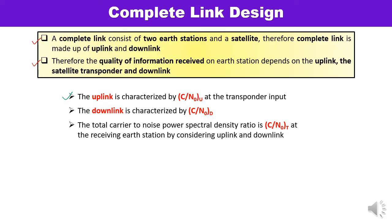Similarly, the satellite downlink deals with the power generation on the satellite and various power gains and losses associated with the signal traveling down from the satellite to the earth station. The downlink is characterized by C/N₀ of D. If the total carrier-to-noise power spectral density is C/N₀ of T, it includes both uplink as well as downlink.